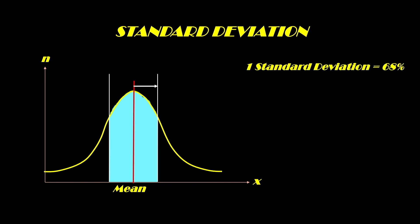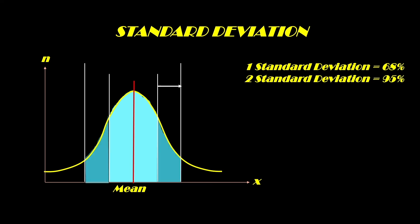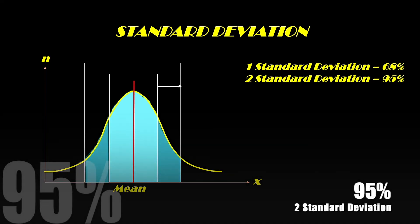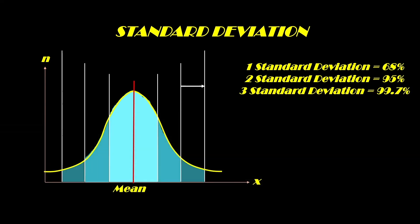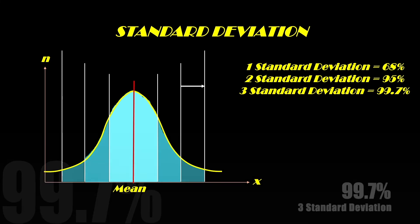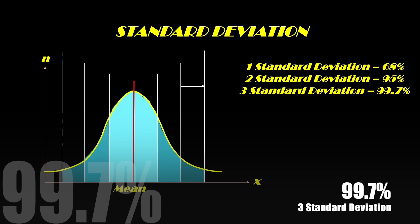Now, a single standard deviation is said to cover 68 percent of the data set around the mean. If we extend that to two standard deviations, it means it covers 95 percent of the data points around the mean. And if we extend it to three standard deviations, then it covers a mouthwatering 99.7 percent of the data points around the mean.